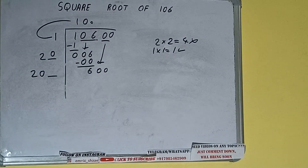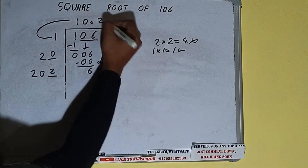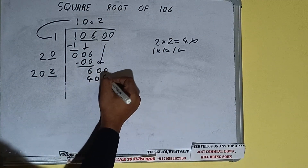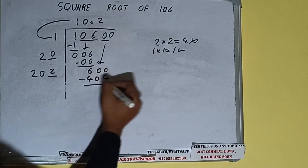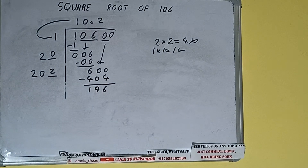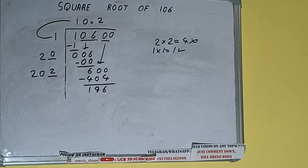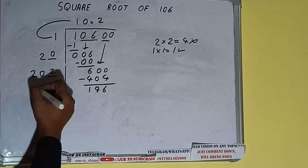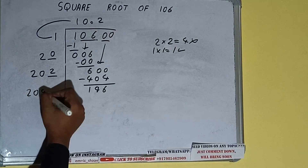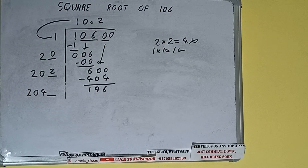Whatever number we write here we have to write here also. We can write 2 here and 2 here; 202 into 2 gives 404. Subtract: 600 minus 404 leaves 196. We did 202 into 2, so add both: 202 plus 2 equals 204, with one digit extra.